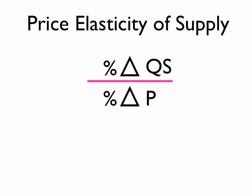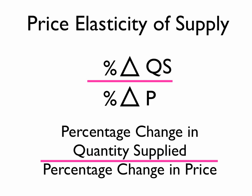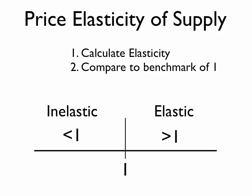You notice that we've changed the numerator here. We're looking at the quantity supplied, not the quantity demanded. The way we analyze this would be to calculate the elasticity and compare that value to our benchmark of 1. If the value is greater than 1, we consider that supply to be elastic. If it's less than 1, it's considered inelastic.